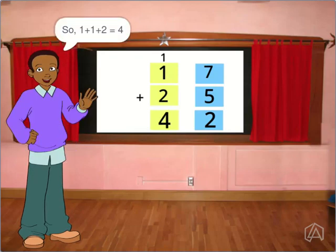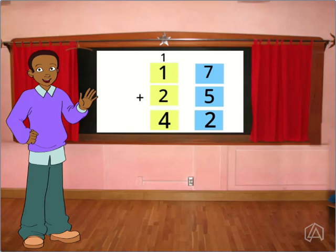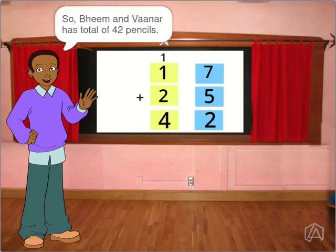So 1 plus 1 plus 2 is equal to 4. So Bean and Vana has total of 42 pencils.